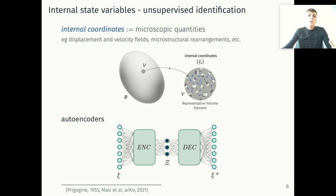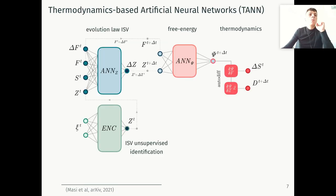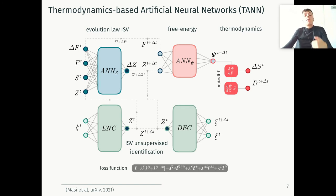In that case, the remedy is very simple: we just parameterize the internal coordinates within the TANN formalism. So we come up with something like this, in which we have an encoder that takes the internal coordinates and gives us a low dimensional representation that coincides with internal state variables, which will be used to feed the upper part of the architecture we already saw. At this point, we can eventually add a decoder that will perform the inverse transformation, taking the predicted internal state variable at time t plus delta t and giving us the evolution of the microstructural field in terms of internal coordinates.